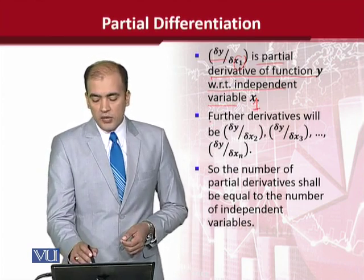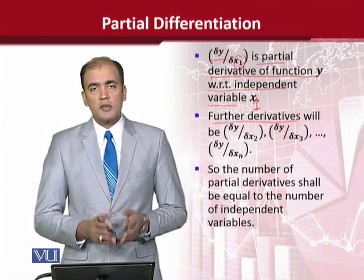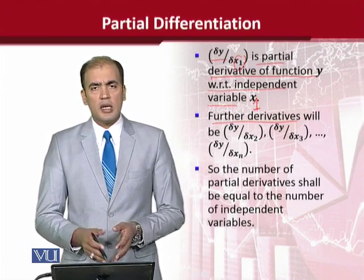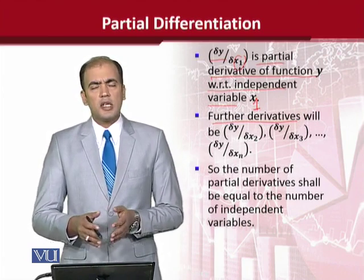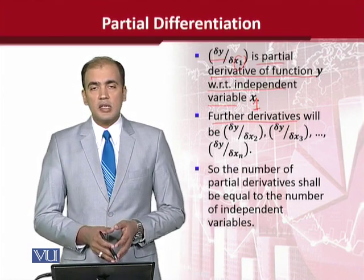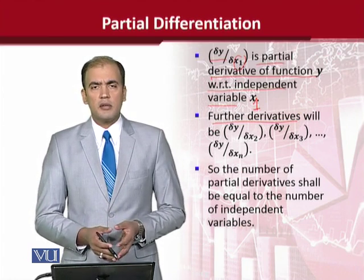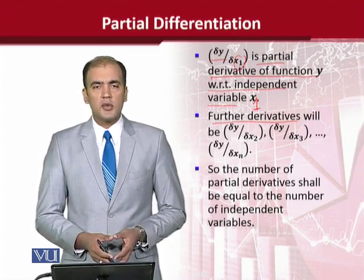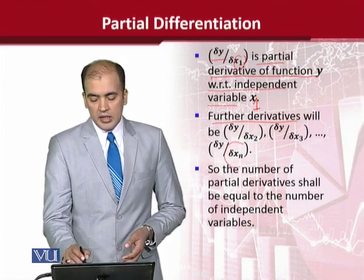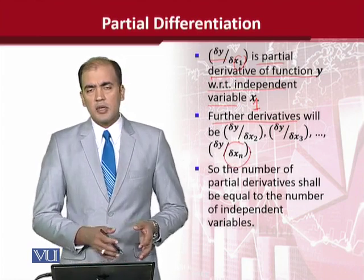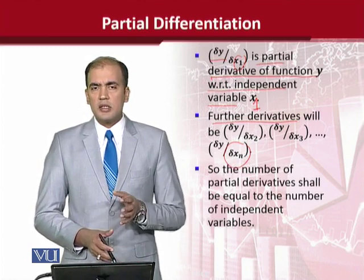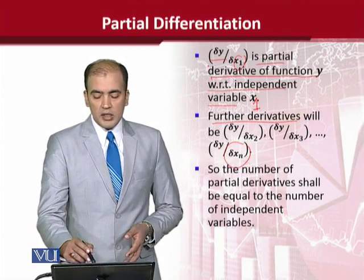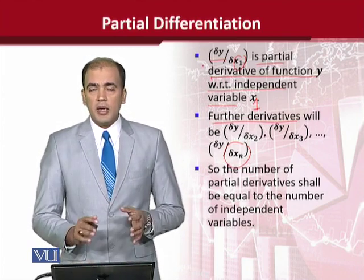अब हम चलेंगे further derivatives की तरफ. x1 के लिहाज से हमने derivative calculate किया, x2 के लिहाज से करें, उसके बाद x3, x4 के लिहाज से, और चलते जाएं until आखिरी variable न आए, जो कि इस case में general form है — n. n कुछ भी हो सकता है: 2, 3, 4, 5, 1000 या इससे ज्यादा भी हो सकता है. तो हमने generally एक variable consider किया, xn. तो derivatives हम इस तरीके से calculate करें. आपने एक चीज़ note की होगी कि हमारे पास n number of variables थे, और हमारे पास जो partial derivatives बने हैं, वो भी n ही हैं.